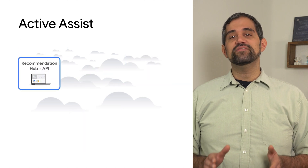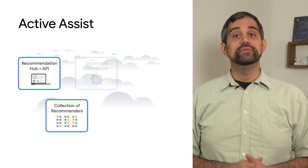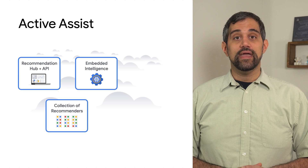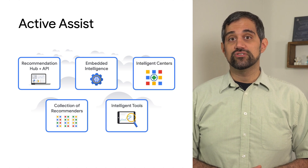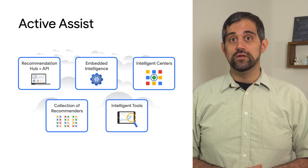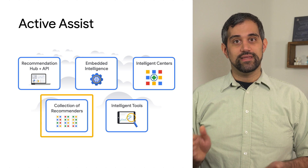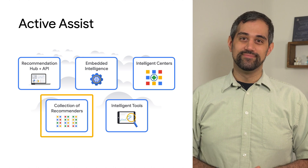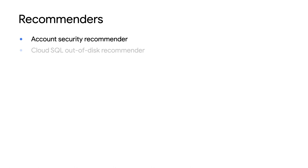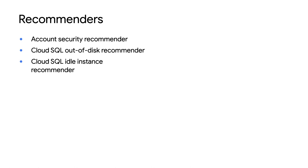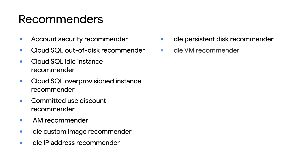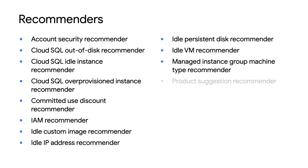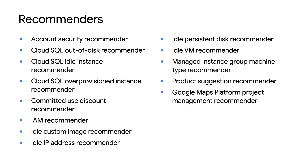The Active Assist portfolio includes the recommendation hub and an API, as well as a collection of recommenders. Let's break down what recommenders are and how they work. Recommenders offer personalized, intelligent insights and recommendations for various Google Cloud resources and services based on your usage data.